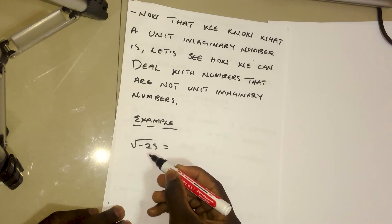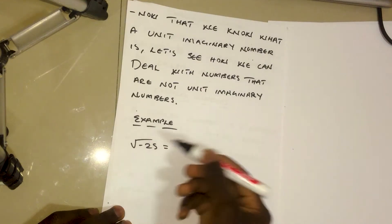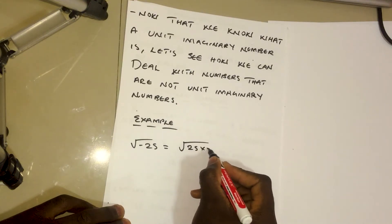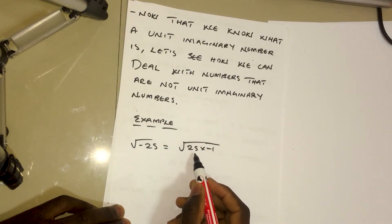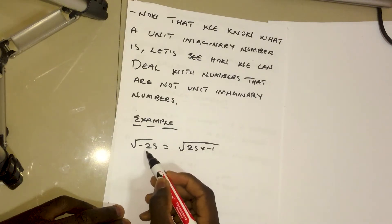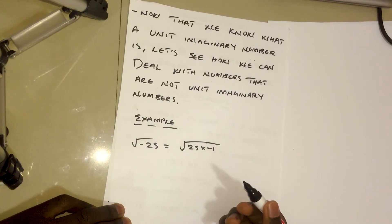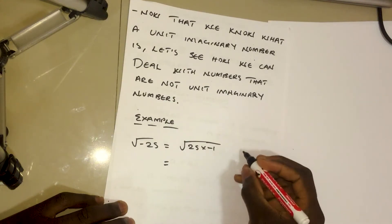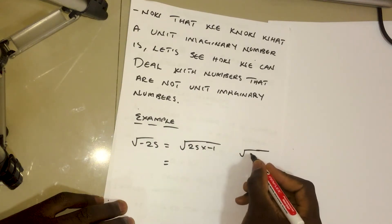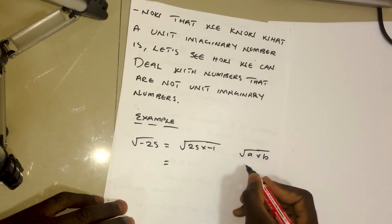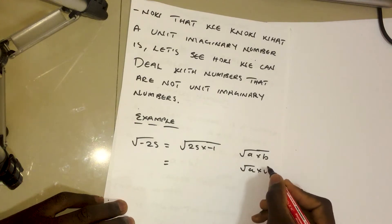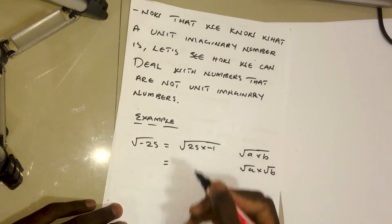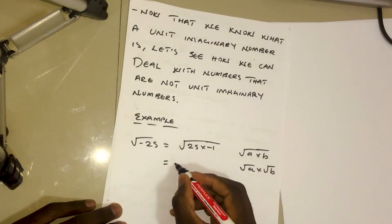For example, the square root of negative 25 — how do we deal with such a number? We can rewrite it as the square root of 25 times negative 1, and we know that negative 1 times 25 gives us negative 25 back. There is a property of exponents which says the square root of a times b equals the square root of a times the square root of b, and we're going to use that same property here.